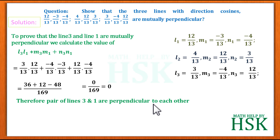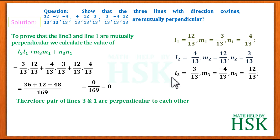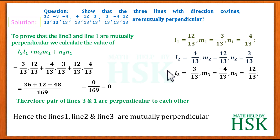Therefore the pair of lines 3 and 1 are perpendicular to each other. Since we have checked all three possible pairs of lines and all are perpendicular, the three lines are mutually perpendicular to each other. This proves what was required in the question.